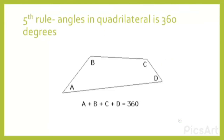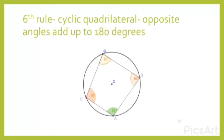The fifth rule is that the angles in a quadrilateral add up to 360 degrees. A quadrilateral is a shape with four sides, and all four of its angles will always add up to 360 degrees.